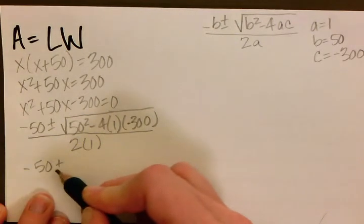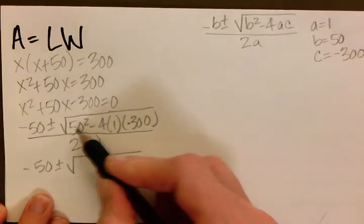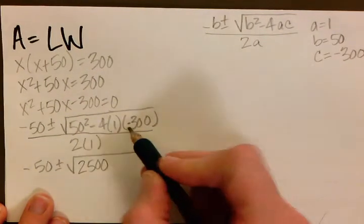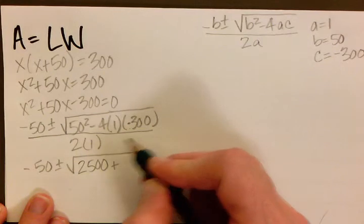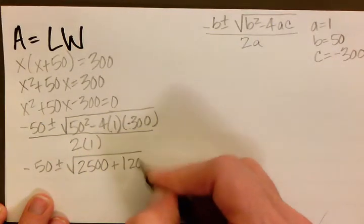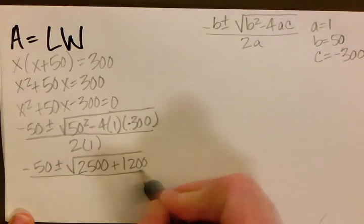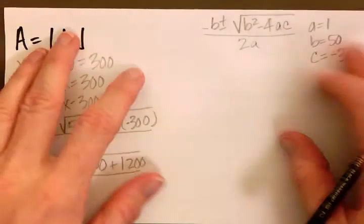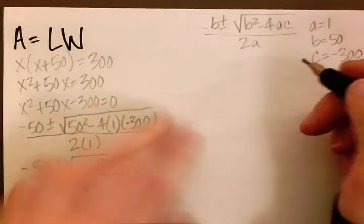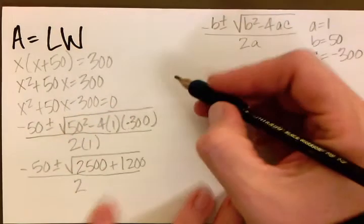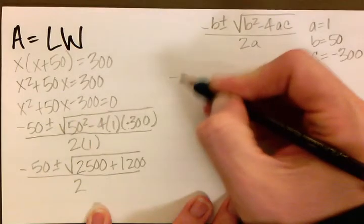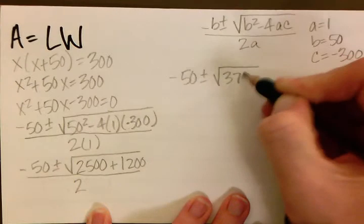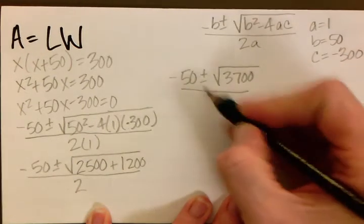Do a little bit of simplification and solving here. 50 squared is 2,500. Negative times a negative is a positive. 4 times 300 is 1,200. And 2 times 1 is 2. I'm going to move up over here. Keep going.